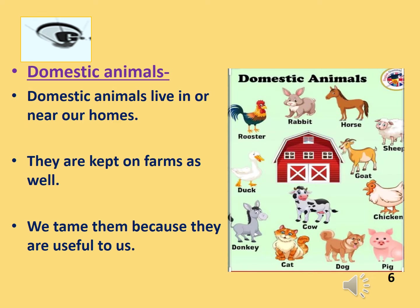First is domestic animals. Domestic animals are the ones that live in or near our homes. They are kept on farms as well. We tame them because they are useful to us. Here is a new word — tame. Tame means that we train them and we keep them with us.